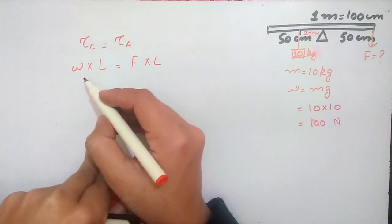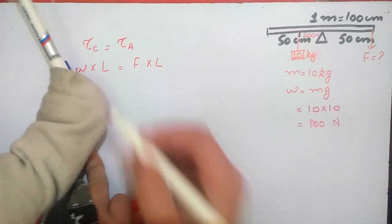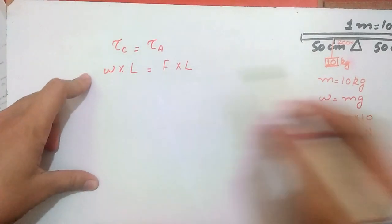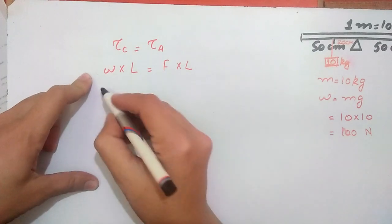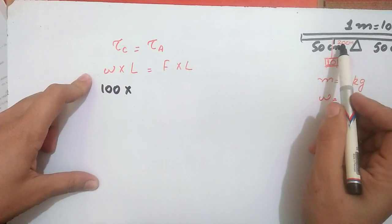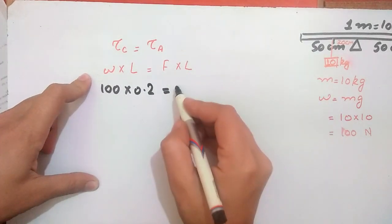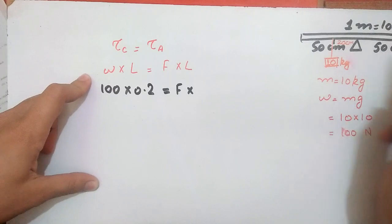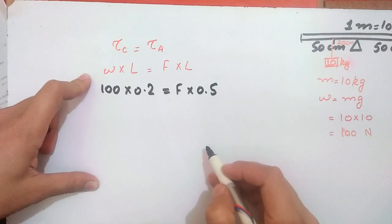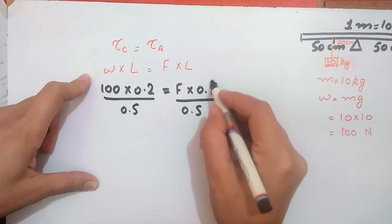Writing the moment equation: weight is 100 N, multiplied by its moment arm of 0.2 meters. On the other side, the force is unknown and its moment arm is 0.5 meters. So the equation is: F × 0.5 = 100 × 0.2, which gives 20. We will divide both sides to find the force.